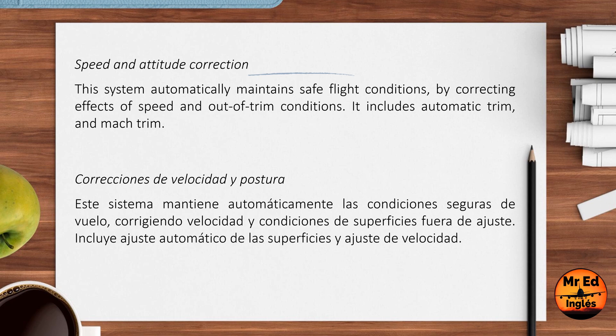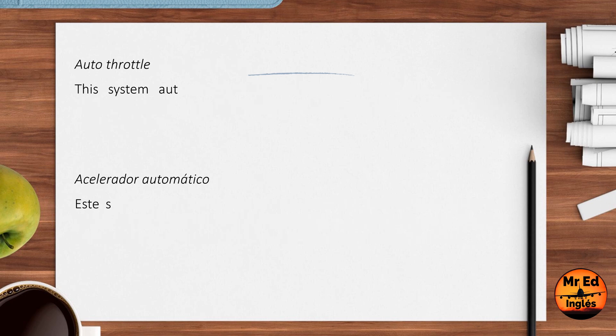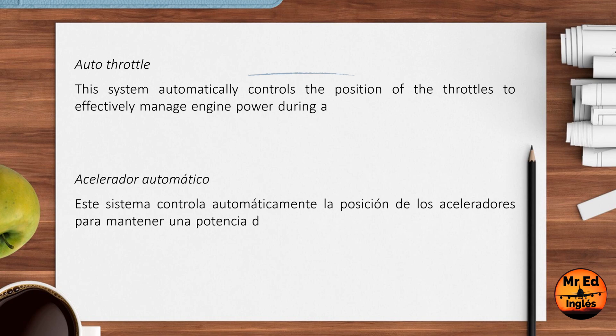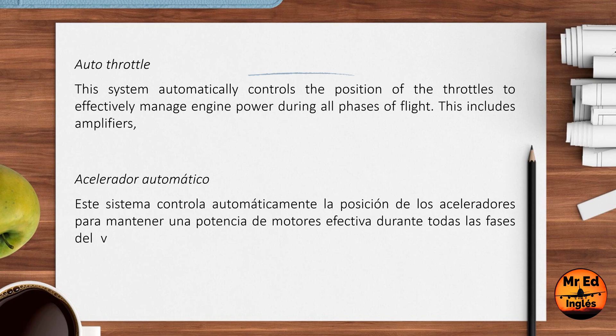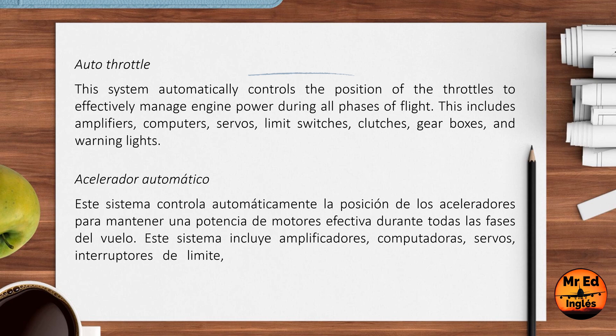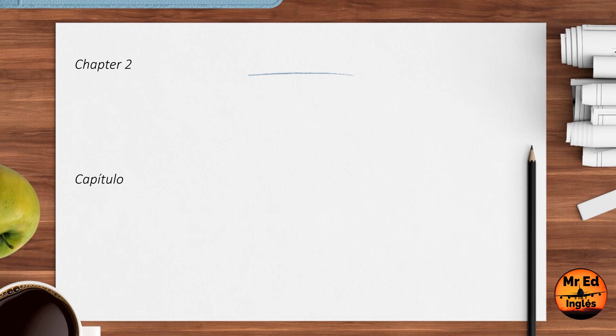It includes automatic trim and mag trim. Aero Throttle: this system automatically controls the position of the throttles to effectively manage engine power during all phases of flight. It includes amplifiers, computers, servos, limit switches, clutches, gearboxes and warning lights.